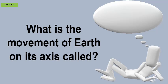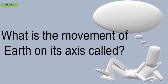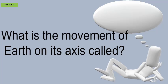What is the movement of Earth on its axis called? Earth spins around its axis, just as a top spins around its spindle. This spinning movement is called Earth's rotation. At the same time that the Earth spins on its axis, it also orbits, or revolves around the Sun. This movement is called revolution.